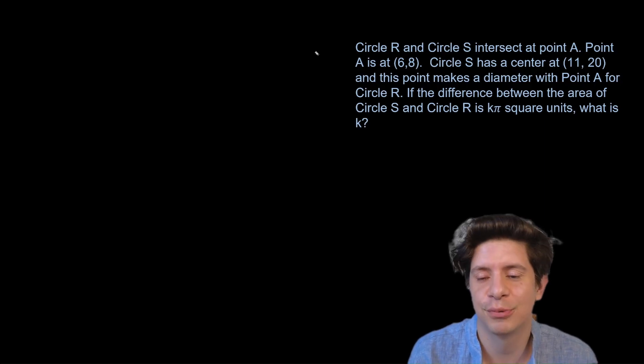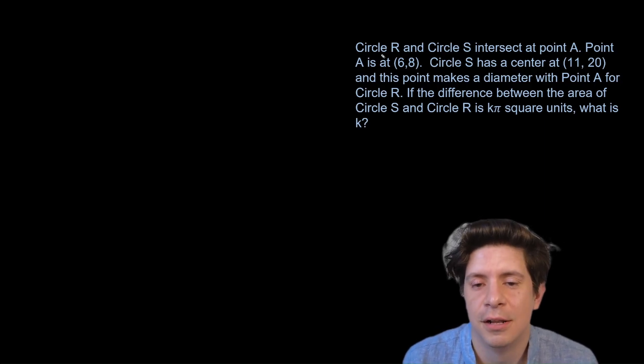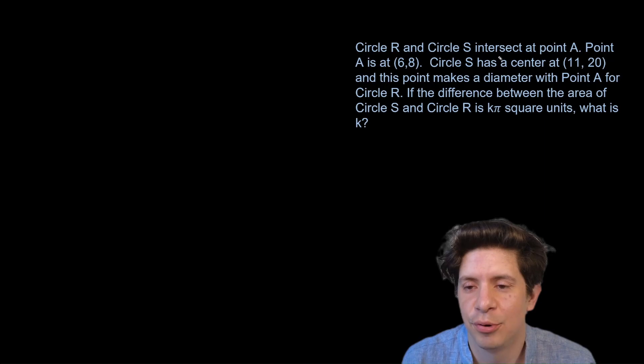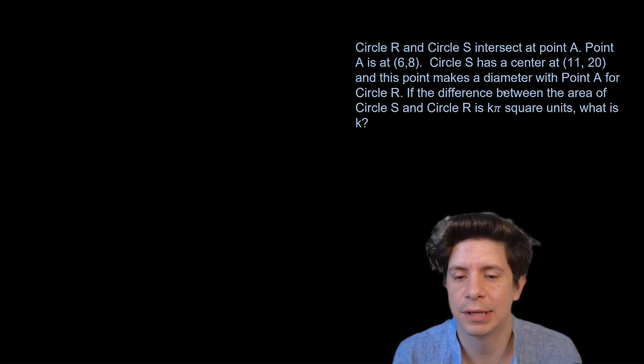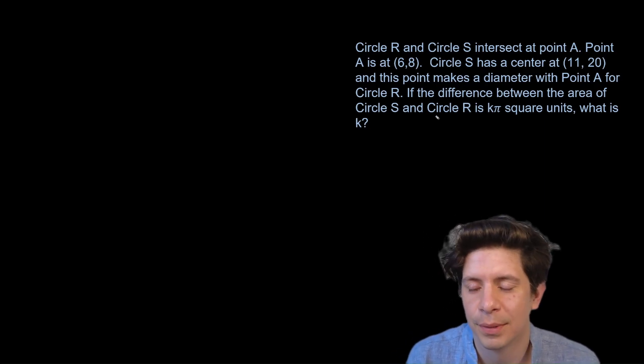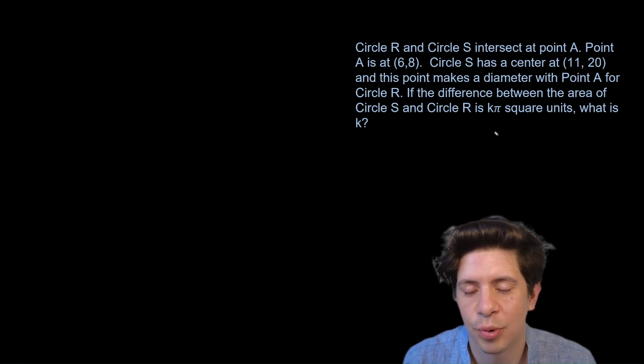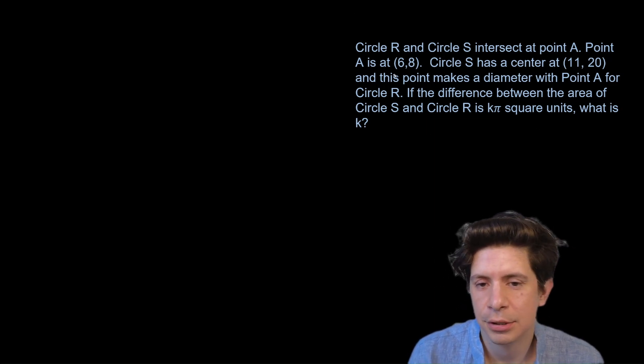I'll show you how to do them so you'll be ready in August. Circle R and Circle S intersect at point A. Point A is at (6,8). Circle S has a center at (11,20) and this point makes a diameter with Point A for Circle R. If the difference between the area of Circle S and Circle R is kπ square units, what is k?